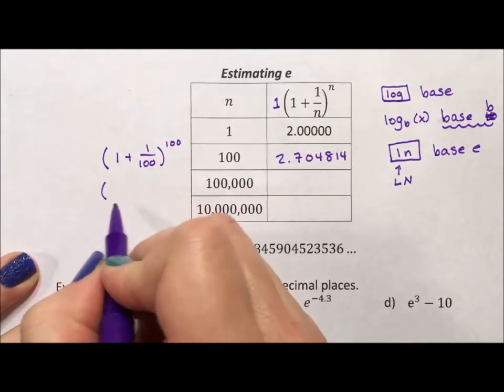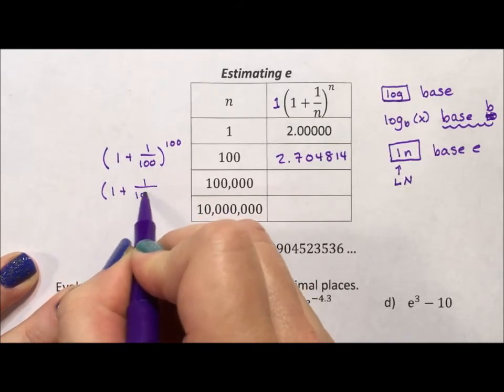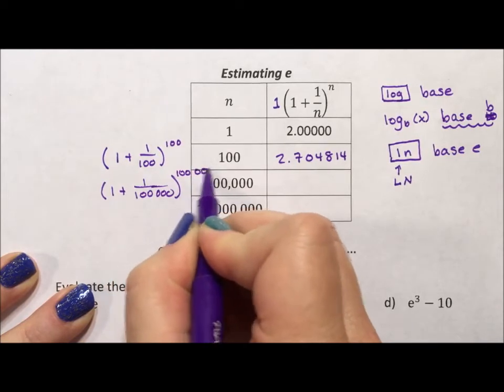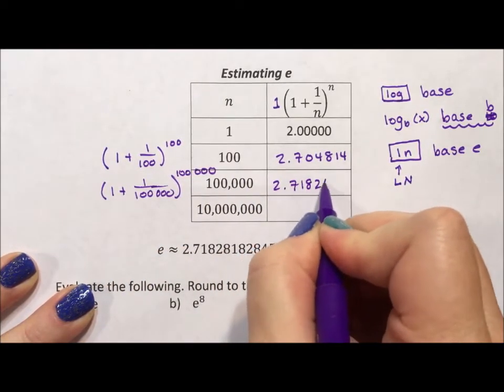If I put in 100,000, 1 over 100,000, to the 100,000, I get 2.718268.